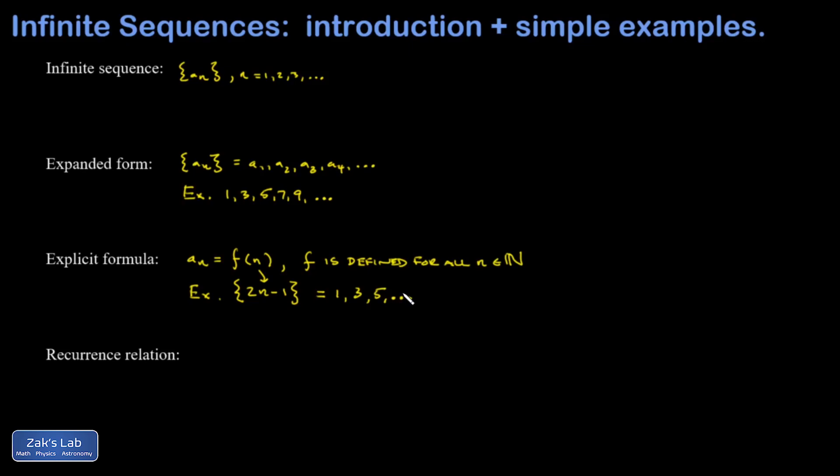Finally, we can define a sequence by using a recurrence relation. And that means you define the next term in terms of previous terms in the sequence. So a_n written in terms of previous terms in the sequence, but then you also need to define a starting point. So I'm going to say plus a starting point.